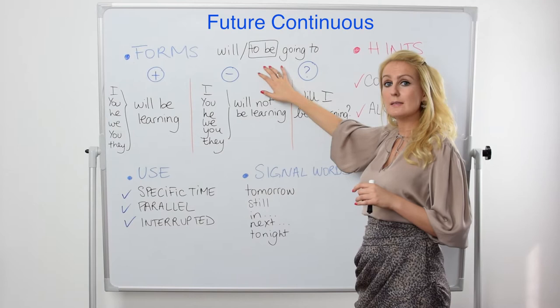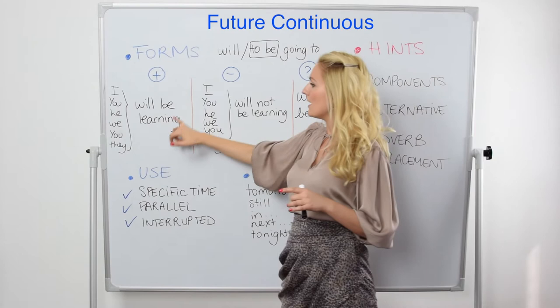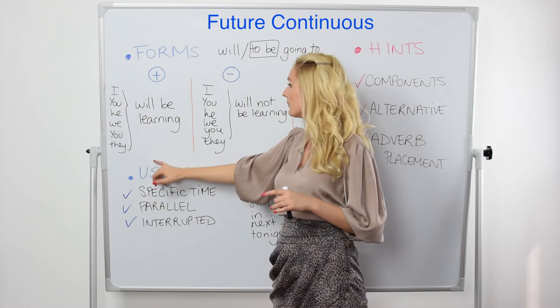Or you can go for 'to be.' You have to conjugate 'to be' in the simple present, add 'going to' behind it, then 'be' and the verb. So: I am going to be learning, you are going to be learning, and so on.